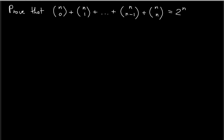We want to prove that the given expression on the left side of the equation is equal to 2 raised to the nth power. The first thing to notice is that this is the sum of precisely binomial coefficients: n choose 0 plus n choose 1, plus all the way until n choose n minus 1, plus n choose n. This is the sum of the binomial coefficients, and we want to show that this sum equals 2 raised to the nth power.